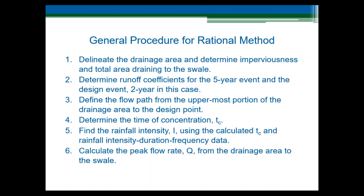These are the general steps for applying the rational method. First, we need to know the drainage area and imperviousness of the watershed. These input parameters can be determined from topographic delineation of the drainage area boundary and delineation of impervious areas. After we know the drainage area and the imperviousness, we can determine runoff coefficients based on the imperviousness and the hydrologic soil group. The next step is to define the longest flow path from the drainage area boundary to the design point, broken into overland flow and shallow concentrated flow travel distances.